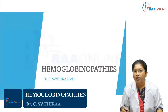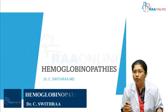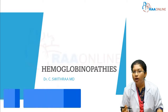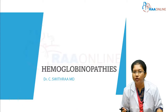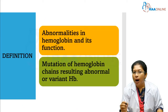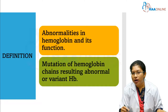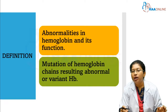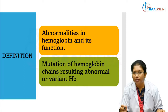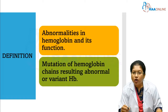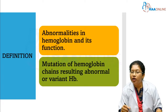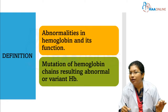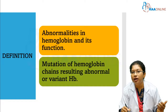This session is about hemoglobinopathies. Hemoglobinopathies means abnormal hemoglobins are produced. Abnormalities in hemoglobin and its function are collectively called as hemoglobinopathies. It is caused by mutation of hemoglobin chains resulting in abnormal or variant hemoglobins.